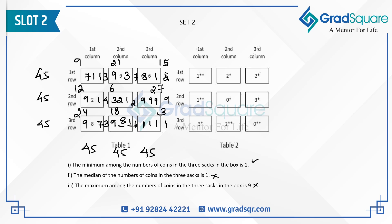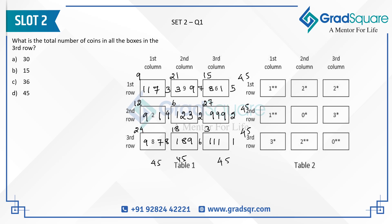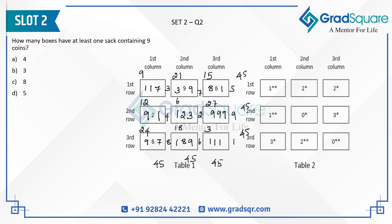The first question asks for the total number of coins in all boxes in the third row. Since each row sums to 45, the answer is 45, which corresponds to option D. The next question asks how many boxes have at least one sack containing nine coins. Counting the boxes with a nine: there are five such boxes, so the answer is five.